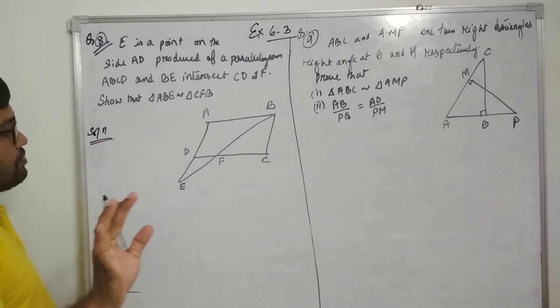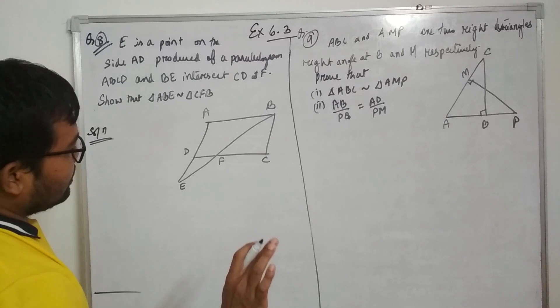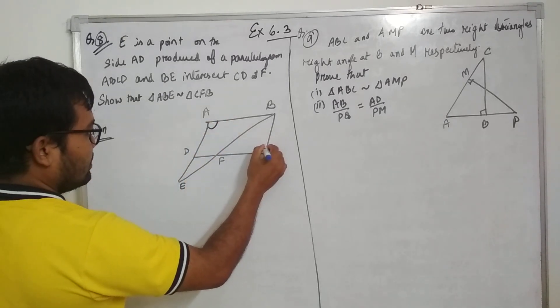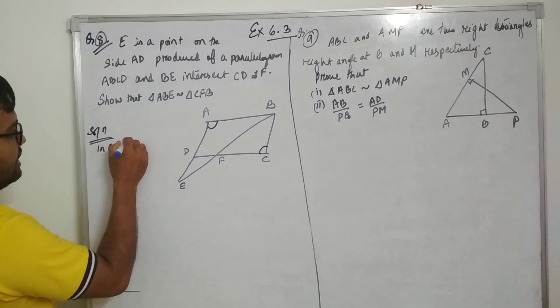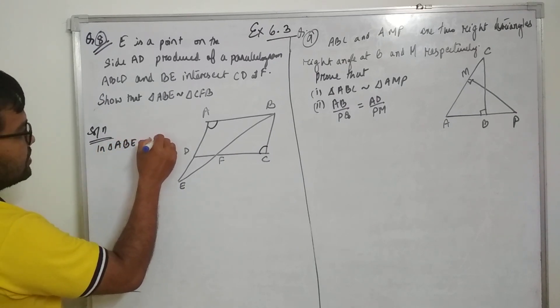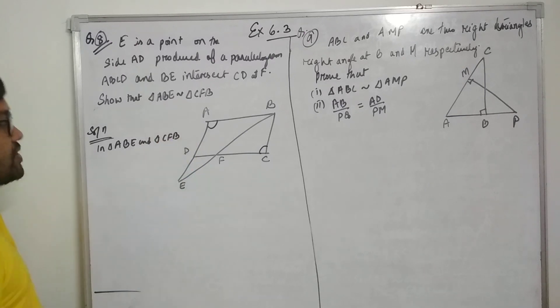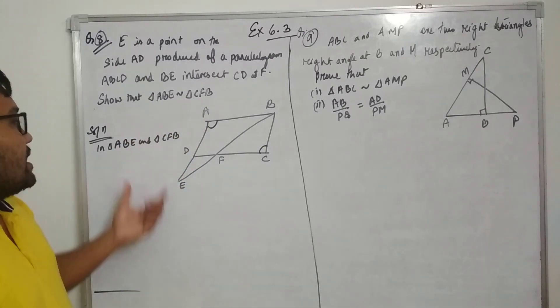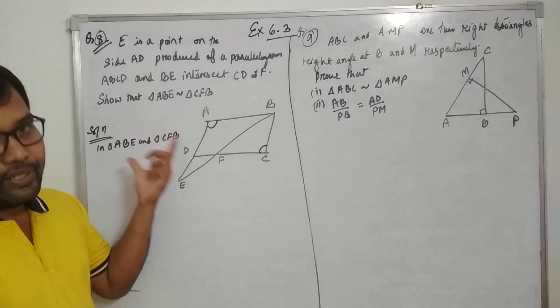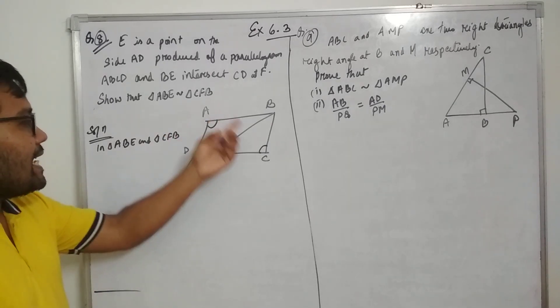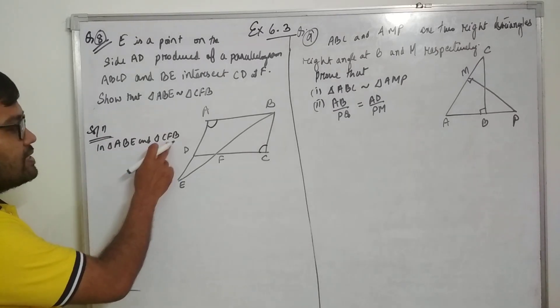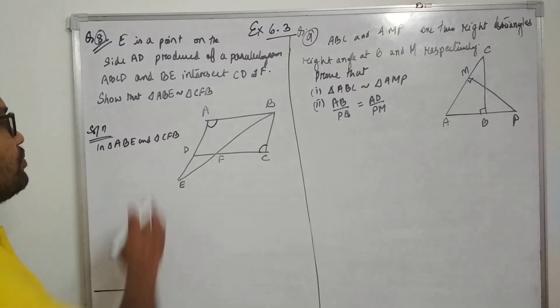A parallelogram is given. Now if you observe this, in triangle ABE and triangle CBF, since these two triangles we need to show are similar, that's why we are taking these two triangles only. Observation is completely based on triangle ABE and CBF because we need to prove it.